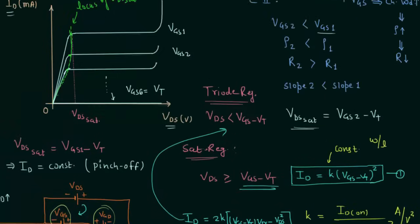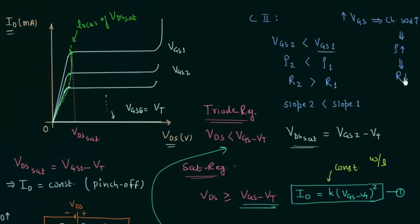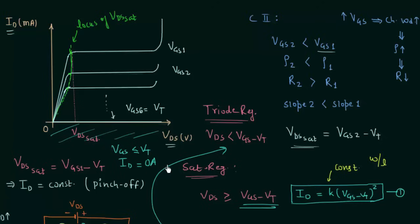The third region is the cutoff region. The condition is VGS must be less than or equal to VT, and the drain current ID equals zero amperes. This means the MOSFET remains off in the cutoff region. We are running short on time, so I will explain the transfer characteristics in the next lecture.